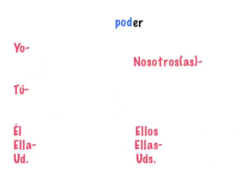Poder means 'to be able to' — like you would say 'I can' using poder. It's a stem-changing verb; specifically, it's an O to UE stem-changing verb.